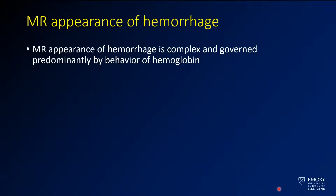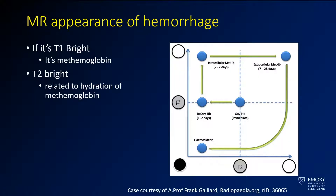The appearance of hemorrhage on MR is significantly more complex than on CT. The MR appearance of hemorrhage is really governed by hemoglobin and the oxidation state that it's in — that's how the MR appearance is determined. In general, if you're looking at an MR and you have hemorrhage and it's bright, that brightness is coming from methemoglobin.